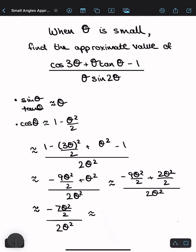And now all you have to do is divide the numbers. So write minus 7θ² over 2 divided by 2θ², which is just the same as multiplying by the reciprocal.